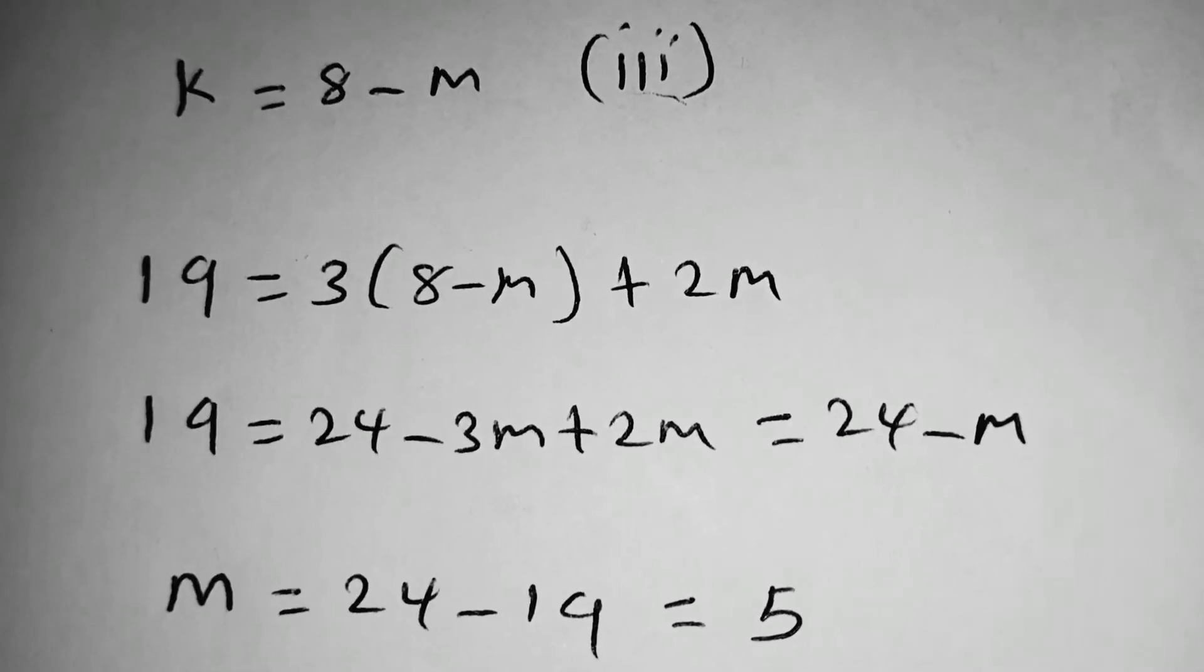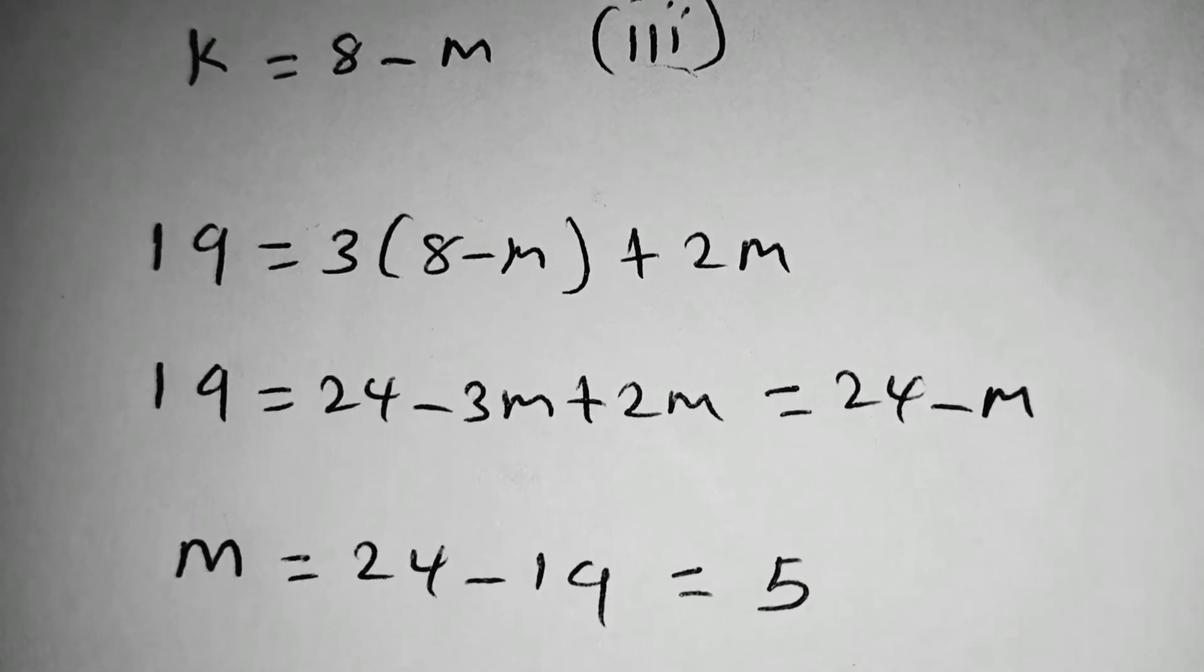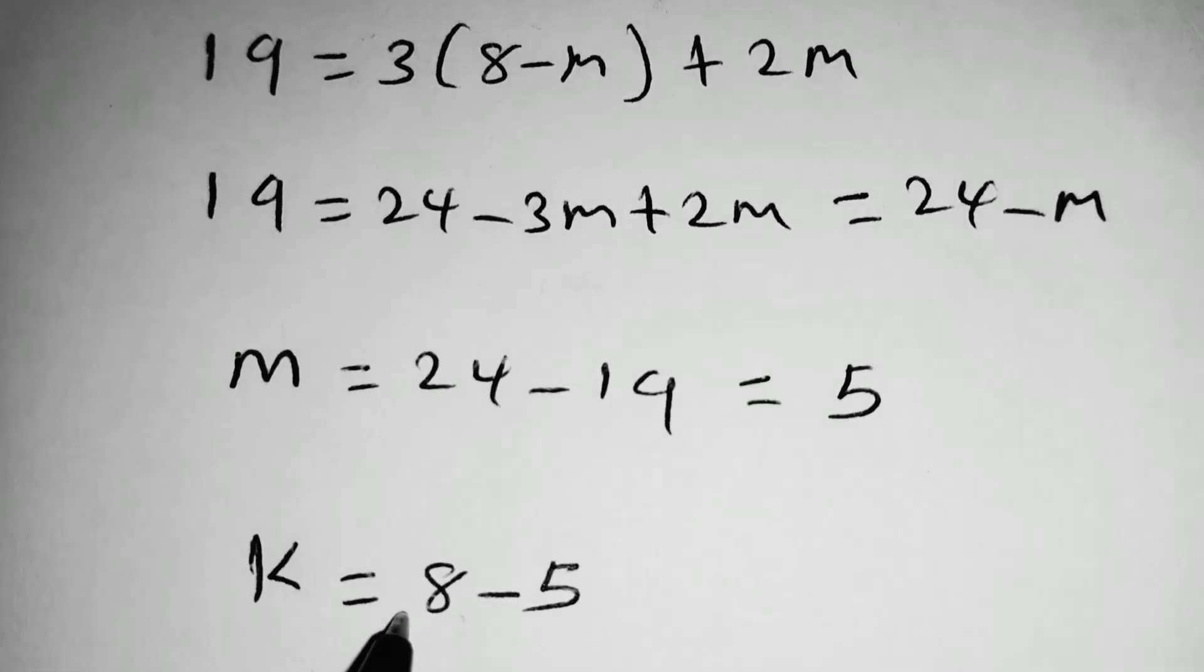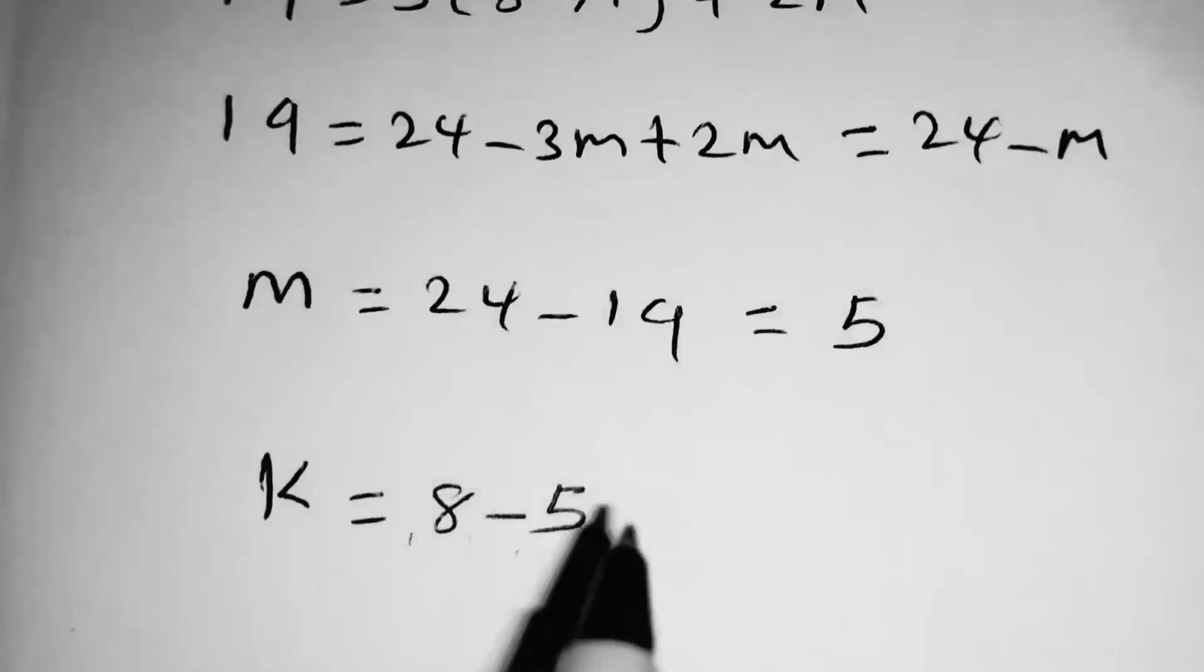Using equation 3, we substitute the value of M to obtain K. So, K will be equal to 8 minus 5, which is equal to 3.